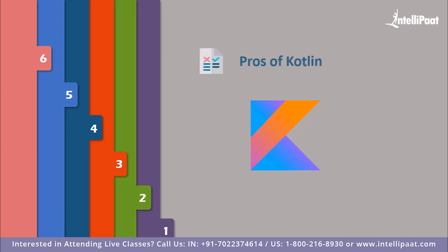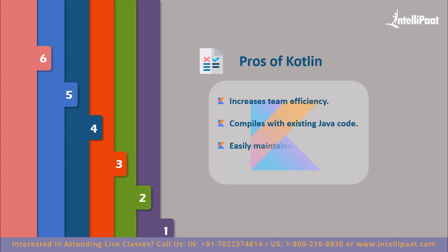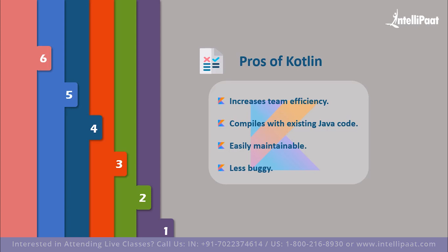Kotlin has become loved by mobile developers. Here are its most prominent benefits. First, it increases team efficiency — being clear and compact, more work can be done as it takes fewer lines to write and deploy working code. Second, it compiles with existing Java code — Kotlin is 100% Java interoperable and consistent with Java tools and frameworks, making it possible to switch to Kotlin step-by-step. Third, it is easily maintainable, supported by a vast majority of IDEs including Android Studio and other SDK tools, helping developers continue with familiar toolkits. Finally, Kotlin is less buggy — it offers a much more clear and compact codebase, making production more stable and consistent.